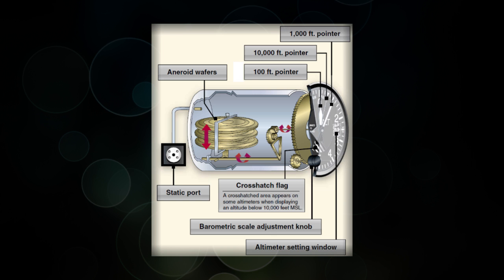Basically, it takes pressure and it translates it to altitude. As we go up in altitude, the pressure decreases, and by the time we get to about 18,000 feet, the pressure is about half of what it is at sea level. And our altimeter will take that pressure and it will change that to indicate altitude.